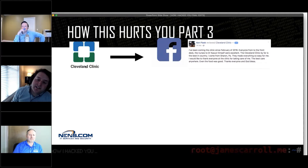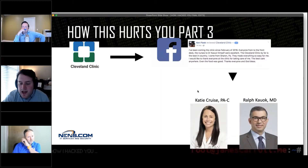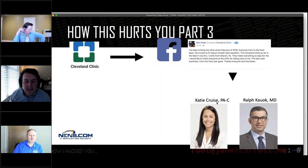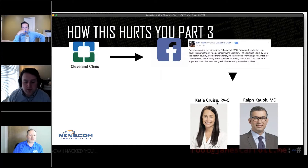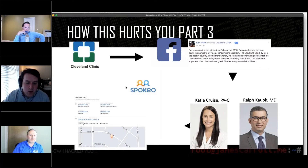I then went on Cleveland Clinic's page, found his doctor Ralph Kayo, and also found his PA Katie Cruz. This is important because when we try to get his data, we're going to exploit the relationship between the PA and the doctor. I then went on a website called Spokio — it's free now but used to be about five dollars a month. It's like white pages on steroids.